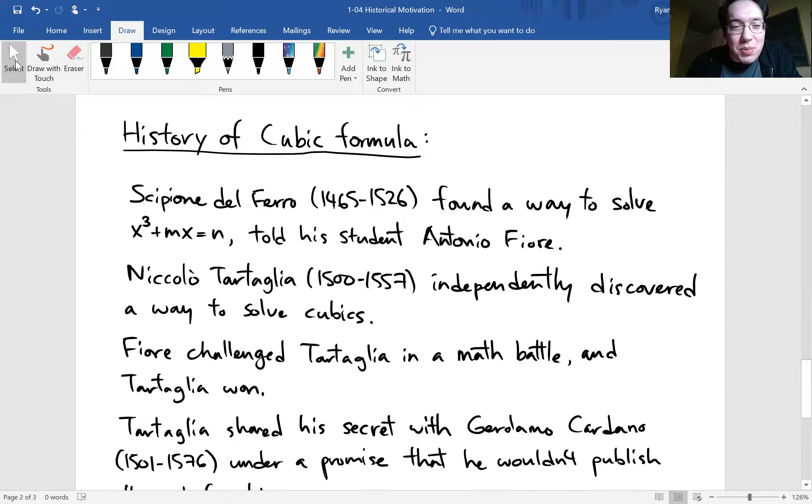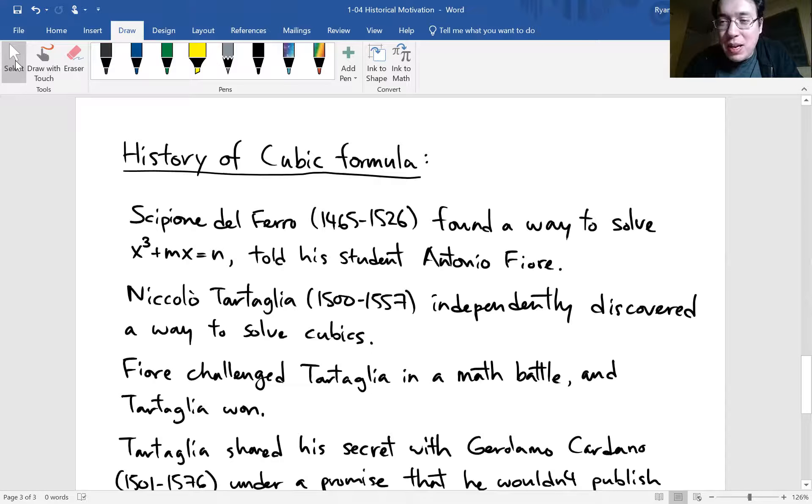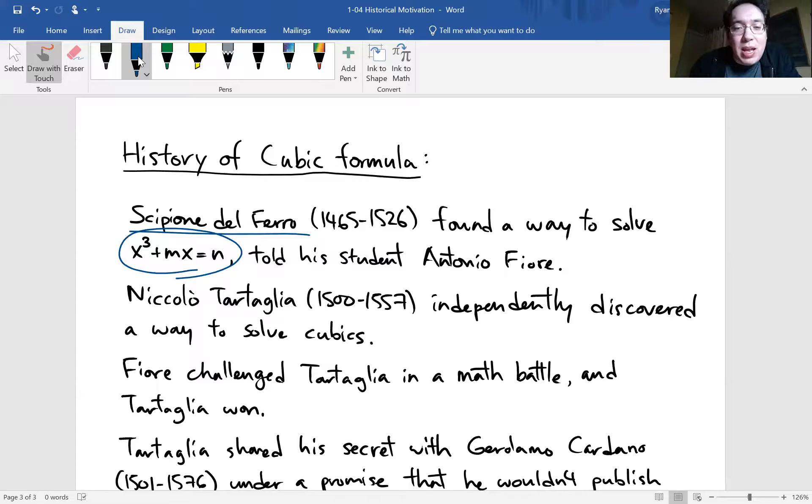Okay. So let's see the history of cubic formula. Okay. So the first people that we know, first person that we know that solved cubic is, I'll probably butcher the name, Scipione del Ferro. And he found a way to solve a cubic formula in a particular situation, not all the cases but just a particular case, one that could be written in this format. And he told his student Antonio Fiore, but he did not publish his solution. Another person solved the cubic formula, Niccolò Tartaglia.